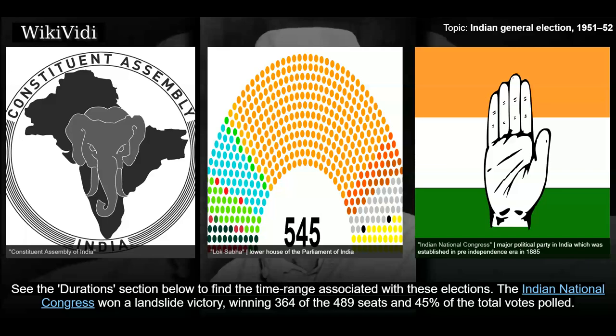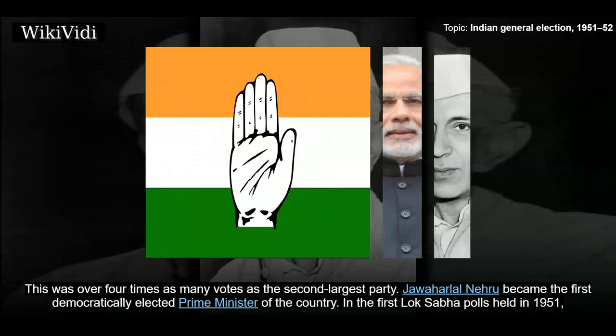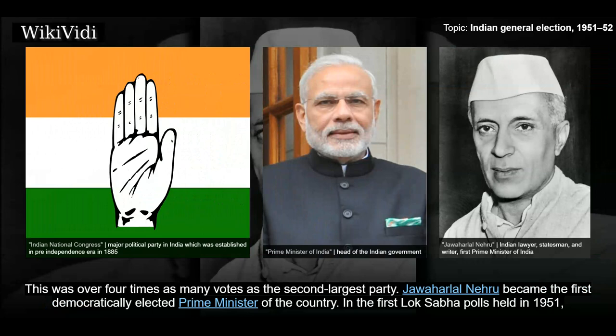The Indian National Congress won a landslide victory, winning 364 of the 489 seats and 45% of the total votes polled. This was over four times as many votes as the second-largest party. Jawaharlal Nehru became the first democratically elected Prime Minister of the country.